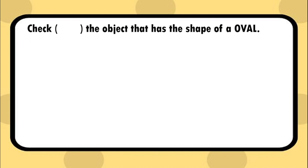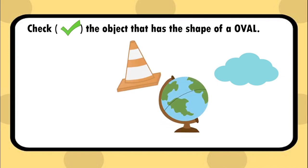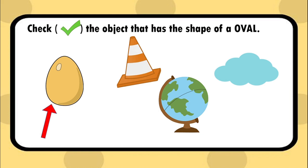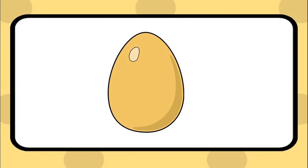Check the object that has the shape of an oval. Very good, the egg has the shape of an oval.